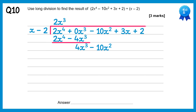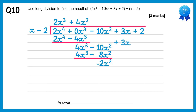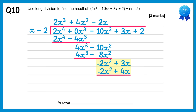Do 4x cubed divided by x which is positive 4x squared. Multiply back through: 4x squared times x is plus 4x cubed, 4x squared times negative 2 is negative 8x squared. Subtract: the 4x cubes will cancel, negative 10x squared take away negative 8x squared is negative 2x squared. Bring down the next term and do negative 2x squared divided by x which gets negative 2x. Multiply back through: you get negative 2x squared plus 4x. Subtract: the negative 2x squareds will cancel, and 3x take 4x is negative x.